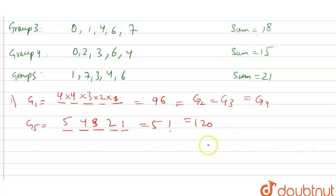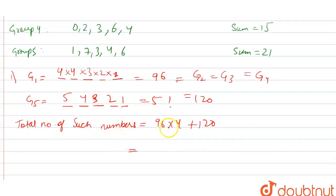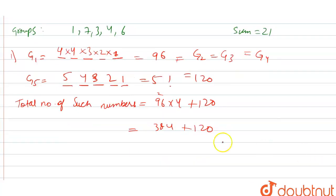So now total number of such numbers will be equal to 96 times 4 plus 120, because 4 groups have 96 each and one group has 120. So 96 times 4 is 384, plus 120 equals 504. So this will be our answer.